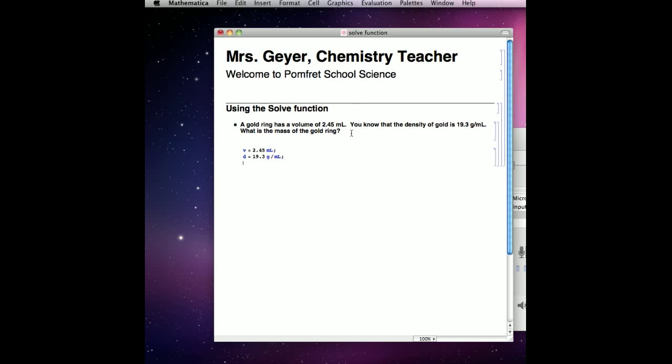To solve for the mass of the ring, type solve with a capital S, square bracket, the equation for density, D equals M over V